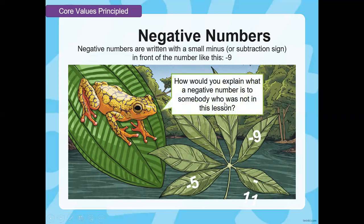How would you explain what a negative number is to somebody who was not in this lesson? For example, if you'd like to explain it to your younger sister or younger brother — how would you tell them that there are numbers below zero? What strategy would you use? You can use a number line and show them that there are numbers below zero, called negative numbers, written with a minus sign next to them.